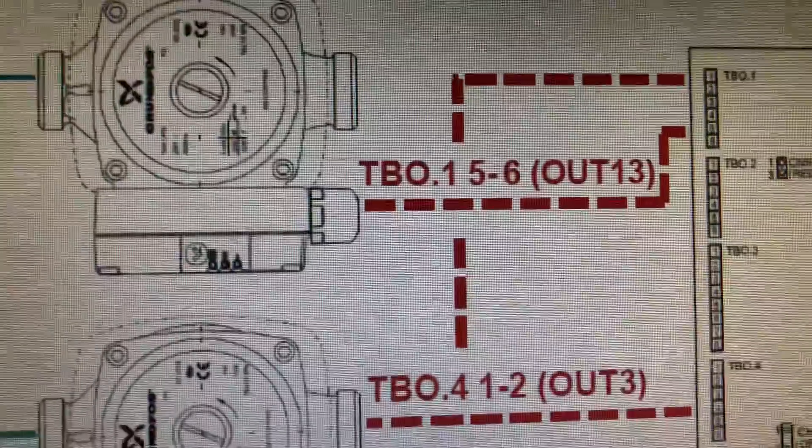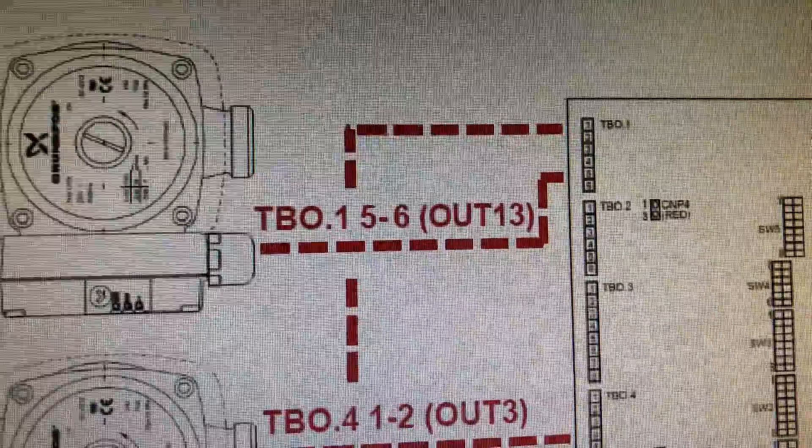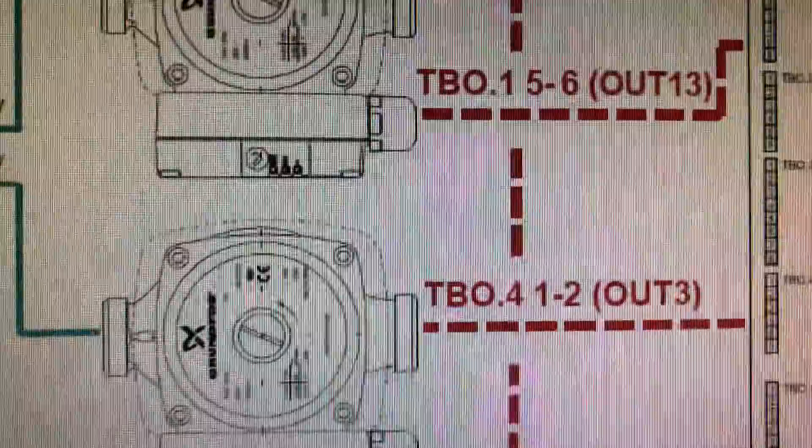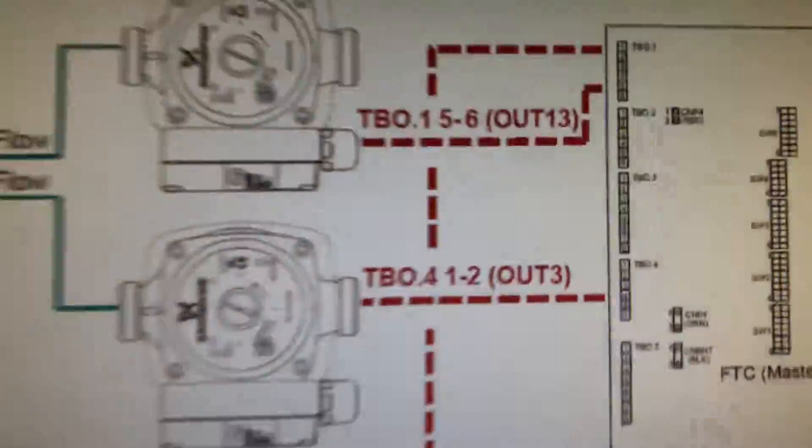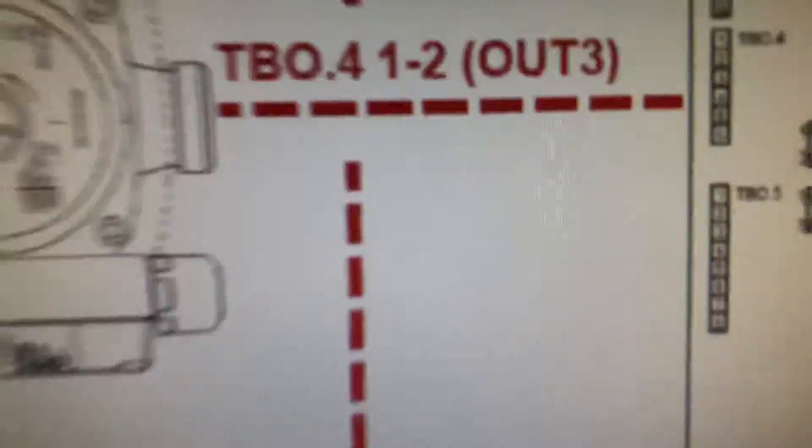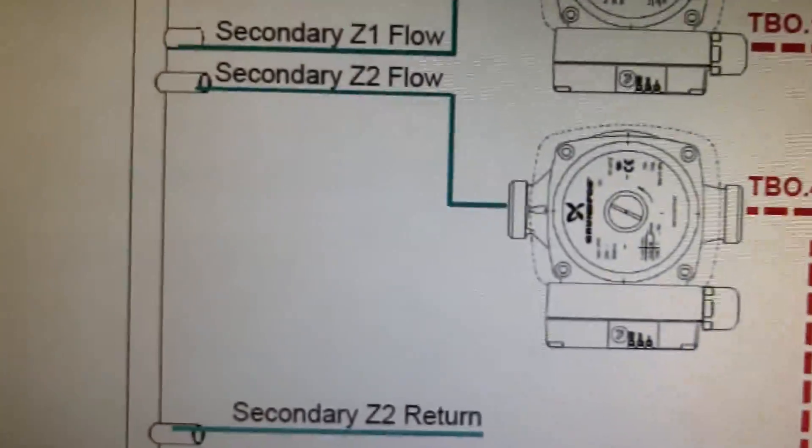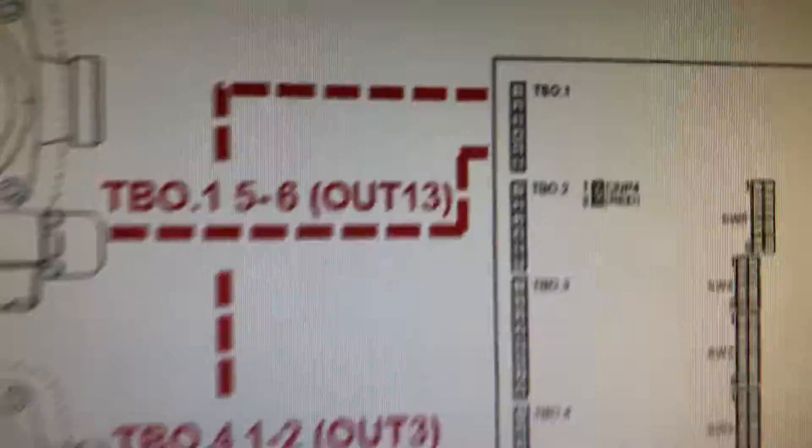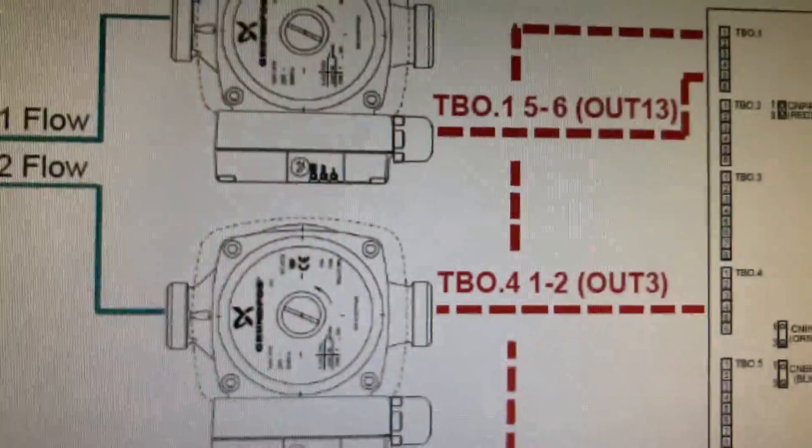See what I mean? TBO 1, 5, 6. TBO 4, 1 and 2. Wire Zone 1 pump to Out 13 which is there. And wire Zone 2 pump to there. Look at the outs. Forget the TBO. Look at the outs.